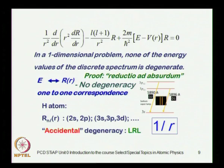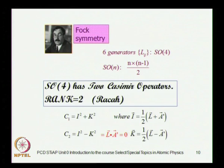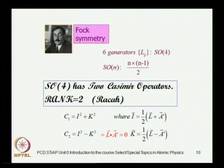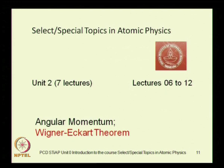The degeneracy of the 2s and 2p levels in the hydrogen atom cannot be explained by this fundamental theorem — in fact, it contradicts it. This was called accidental degeneracy, but it is now understood in terms of the complete symmetry of the hydrogen atom, which is not just SO(3) but SO(4) — sometimes called the Fock symmetry. We will discuss the Fock symmetry of the hydrogen atom, develop the Casimir operators for SO(4), and by studying the group properties of this symmetry we will get the eigenvalue spectrum of the hydrogen atom and recognize that the degeneracy is not accidental — there is a good physical reason for it.